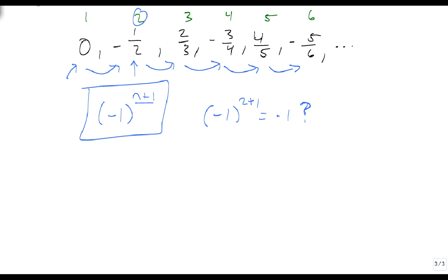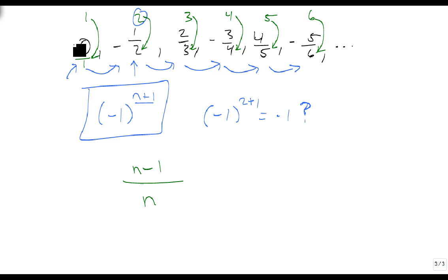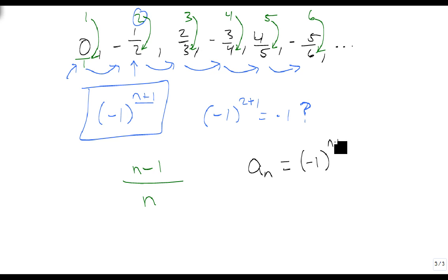The second part isn't quite as easy, but notice that if we look at the sequence, the 2 appears in the second term, the 3 is in the third, the 4 in the fourth, the 5 in the fifth, the 6 in the sixth, and so on. We can put the first term over 1, making it 0 over 1, and then the 1 matches. So we're also creating a fraction with n on the bottom. Looking at the top, it's always n minus 1: 1 minus 1 is 0, 2 minus 1 is 1, 3 minus 1 is 2, 4 minus 1 is 3, 5 minus 1 is 4, 6 minus 1 is 5. So our general term a sub n is negative 1 to the n plus 1, times the quantity n minus 1 over n. This is our general term, and it lets us find any term we want.